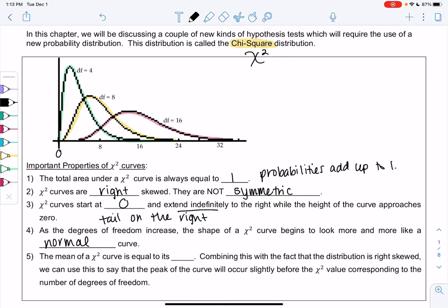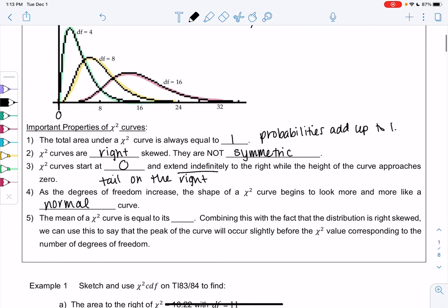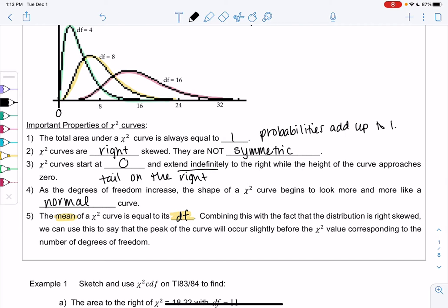And then this is where the chi-square curve gets weird. The mean of the χ² curve is actually equal to its degrees of freedom. So this part is very different than before, so we'll see it in the examples below.